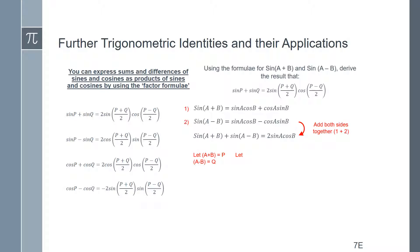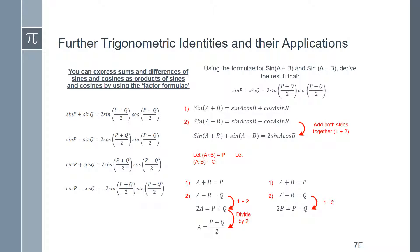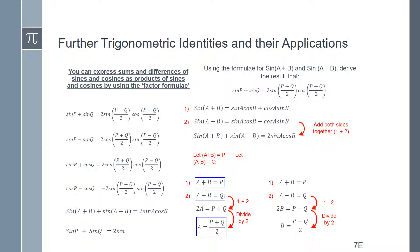Let a+b equal p and a-b equal q. Adding those two equations together: 2a = p+q, so a = (p+q)/2. Subtracting one from the other: 2b = p-q, so b = (p-q)/2. Now substituting back: a+b is p, a-b is q, a can be written as (p+q)/2, and b can be written as (p-q)/2.